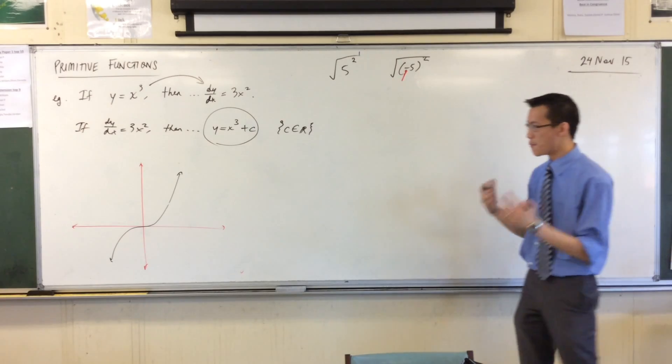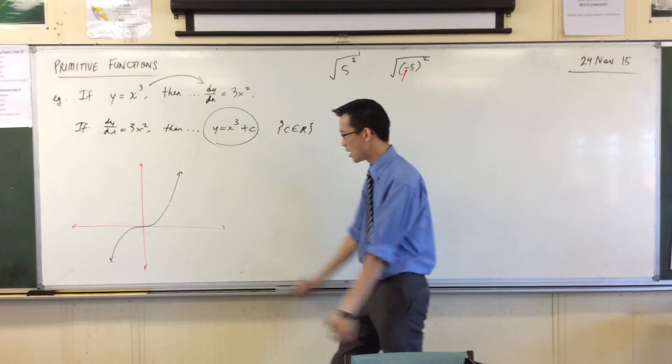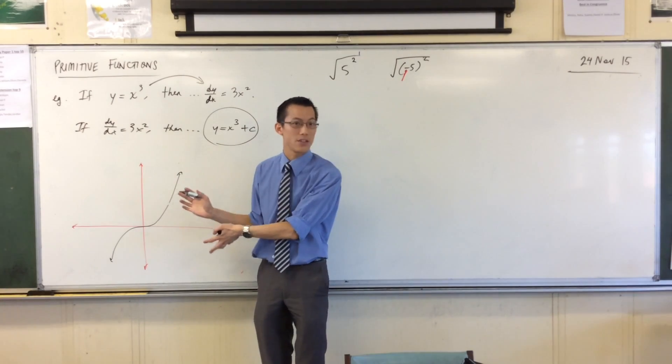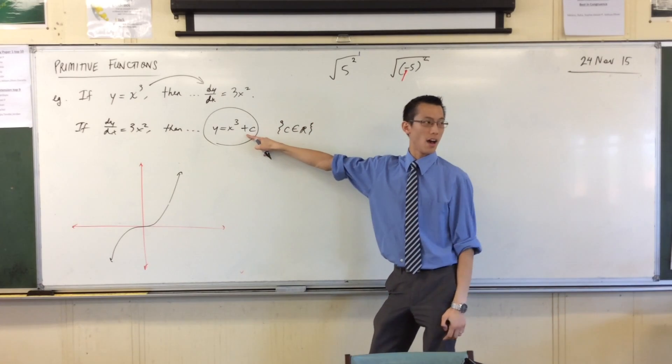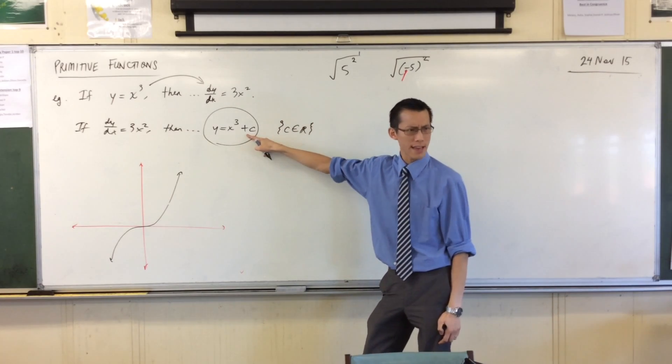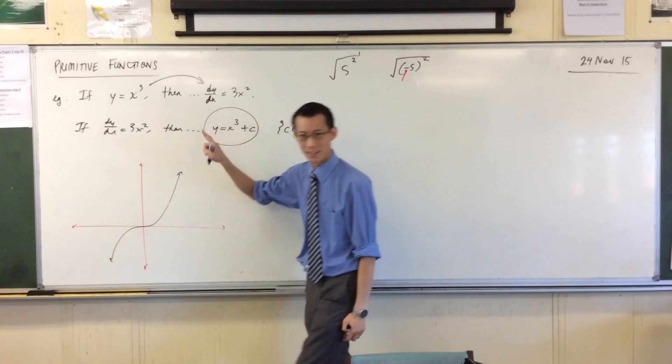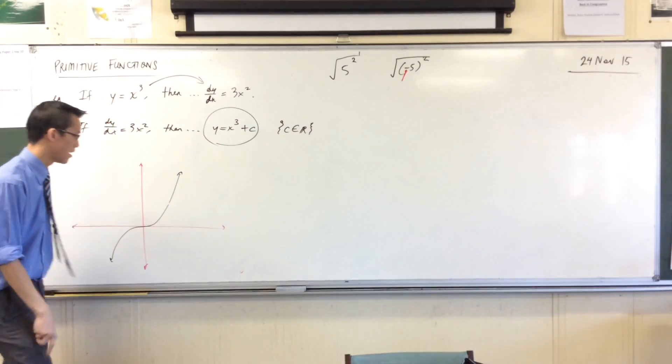Now, every other member in this family of primitives has exactly the same kind of shape, but it's off by a vertical shift. Do you see that? In fact, this c is really modifying the y, it's not modifying the x at all.